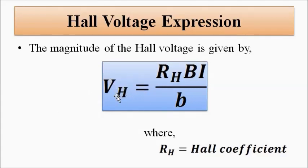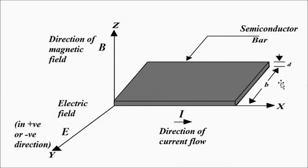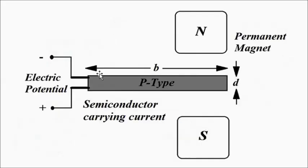The Hall voltage expression, already discussed in the earlier video, is: V_H = R_H × B × I / p, where V_H is the induced Hall voltage, R_H is the Hall coefficient, B is the magnetic field strength, I is the current flowing through the semiconductor, and p is the width of the semiconductor. In three dimensions, d is the thickness of the specimen and p is the width.